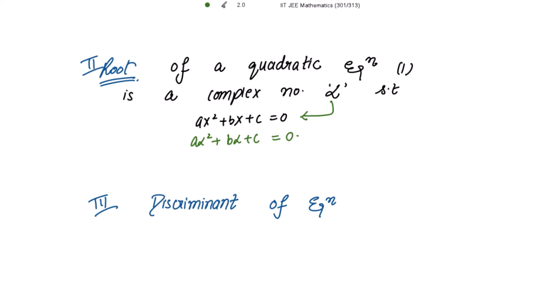Then is the discriminant of the equation, and it is denoted by D. It is the quantity b² − 4ac, where b is the coefficient of x, a is the coefficient of x², and c is the constant.